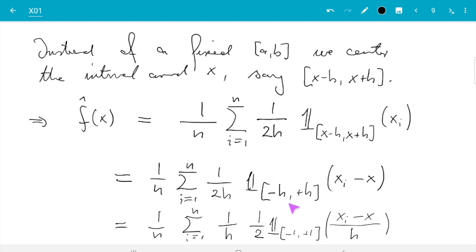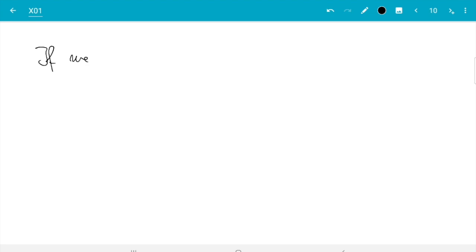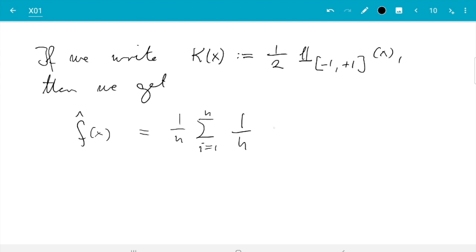The reason I am doing this is I want to now give a name to that function. So if we write k(x) = (1/2) indicator function [-1, +1] of x, then we get f̂(x) = 1/n sum from i=1 to n, (1/h) k((x_i - x)/h).